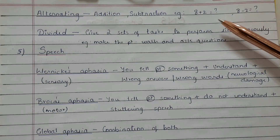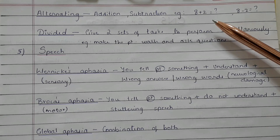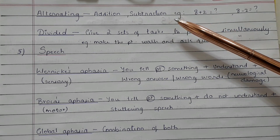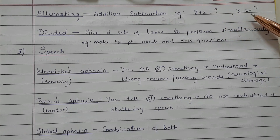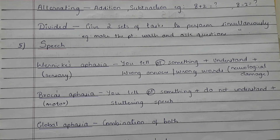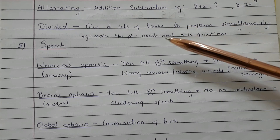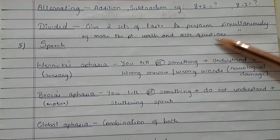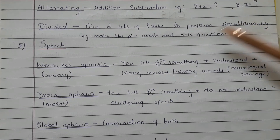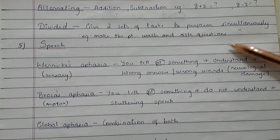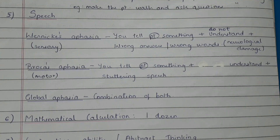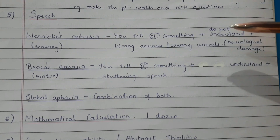Alternating attention includes addition and subtraction — for example, ask what is 8 plus 2 and what is 8 minus 2. Divided attention: give two sets of tasks to perform simultaneously — for example, make the patient walk while also asking questions simultaneously. The next higher mental function is speech.